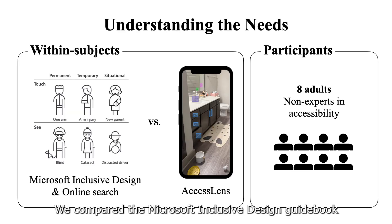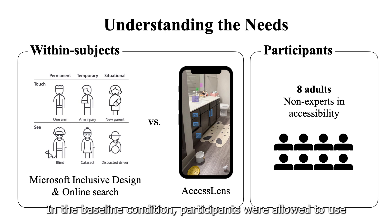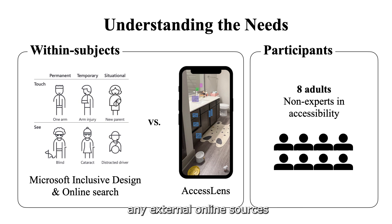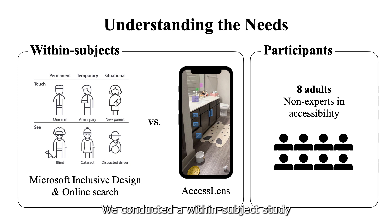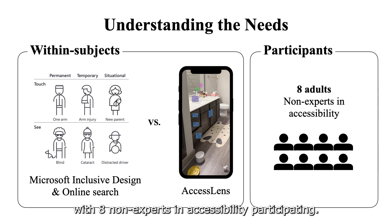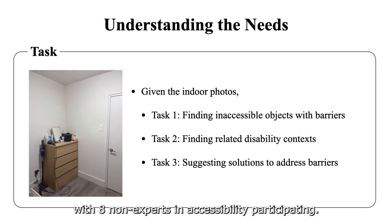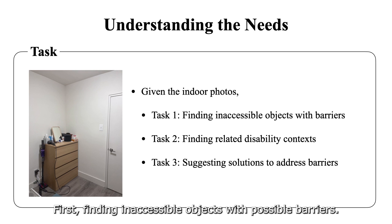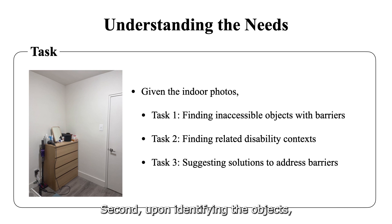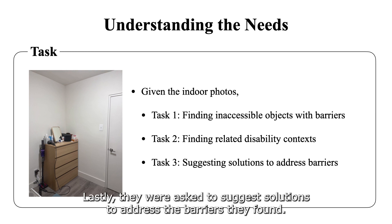To better understand people's needs, we compared the Microsoft Inclusive Design Guidebook and XS Lens. In the baseline condition, participants were allowed to use any external online sources, while in the experimental condition, they only used XS Lens. We conducted a within-subject study, where participants experienced both conditions, with 8 non-experts in accessibility participating. They were given indoor photos and performed 3 tasks: first, finding inaccessible objects with possible barriers; second, upon identifying the objects, they came up with the related disability contexts; and lastly, they were asked to suggest solutions to address the barriers they found.